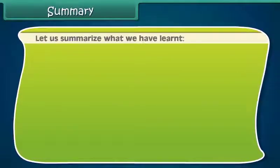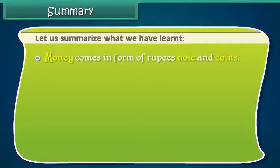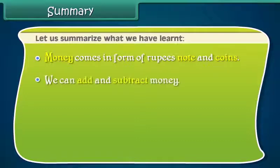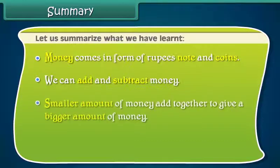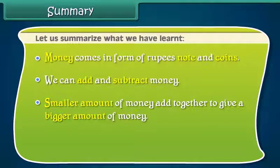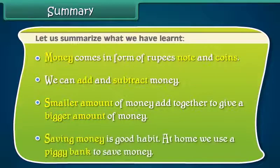Let us summarize what we have learnt. Money comes in the form of rupee notes and coins. We can add and subtract money. Smaller amounts of money add together to give a bigger amount of money. Saving money is a good habit — at home, we use a piggy bank to save money.